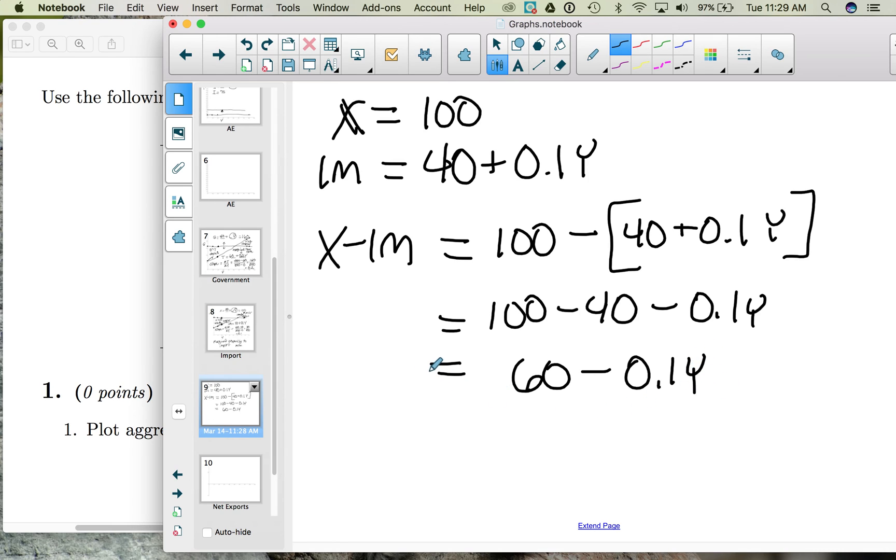What this tells us is that when income is zero, our autonomous net exports are 60. So if income is zero, we're bringing in $60 more into our economy than is leaving. As our income increases, we have money that is leaving our country. So this negative here in front of the 0.1 tells you that money is leaving our economy as our income increases.